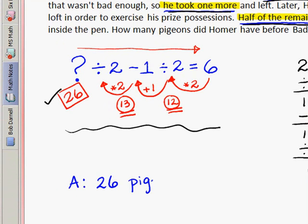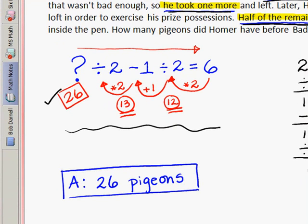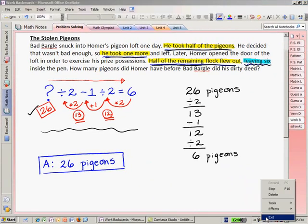because the question asked, How many pigeons did Homer have before Bad Bargle did his dirty deed? And as I always say, please put a box around your answer so I can find it easily.